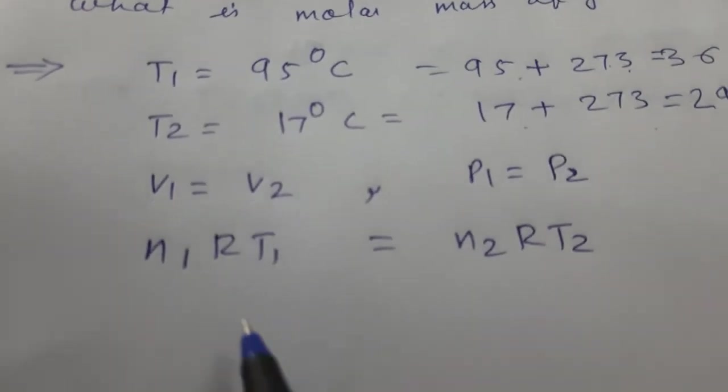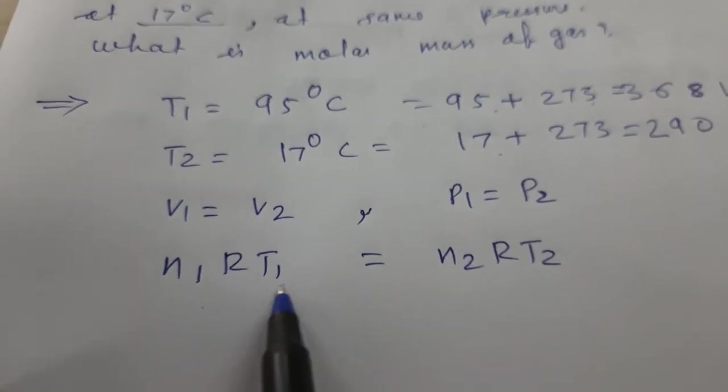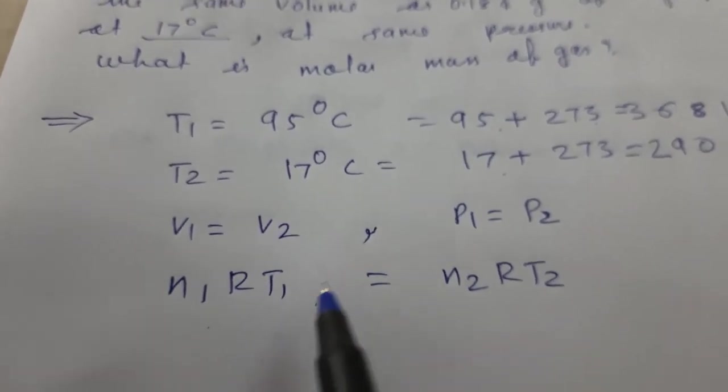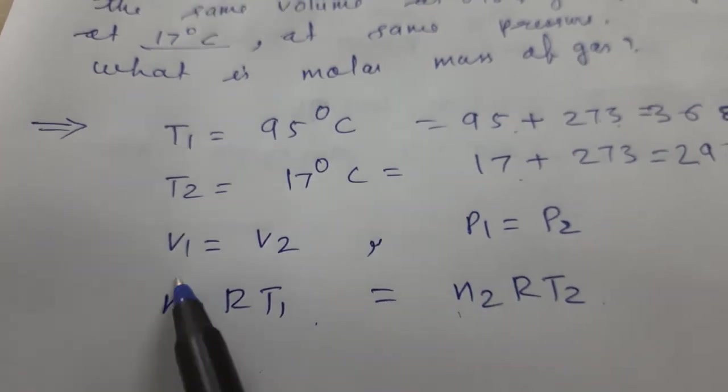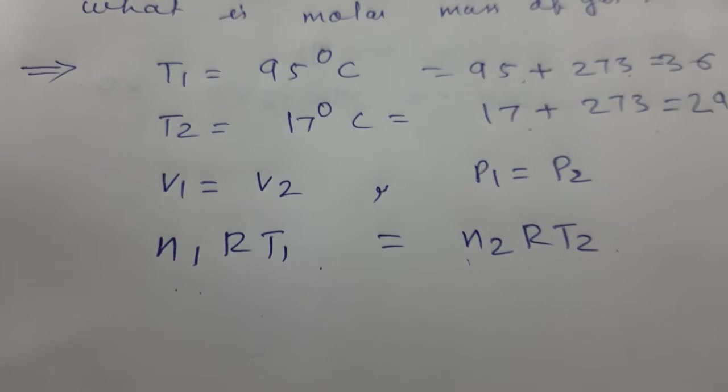N1RT1 equals N2RT2. From the formula PV equals NRT, P1 equals N1RT1 and P2 equals N2RT2. So these two are equal. N1RT1 equals N2RT2.